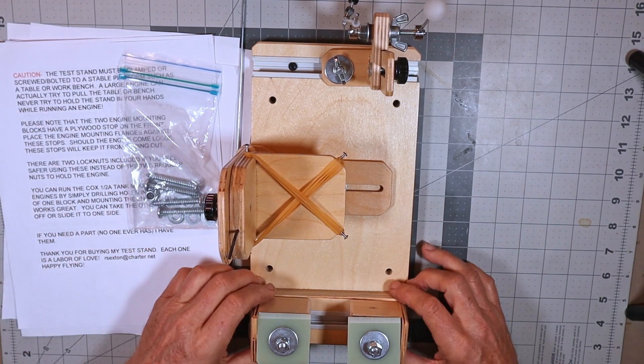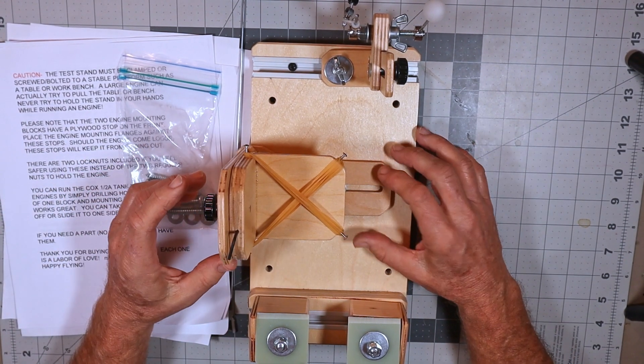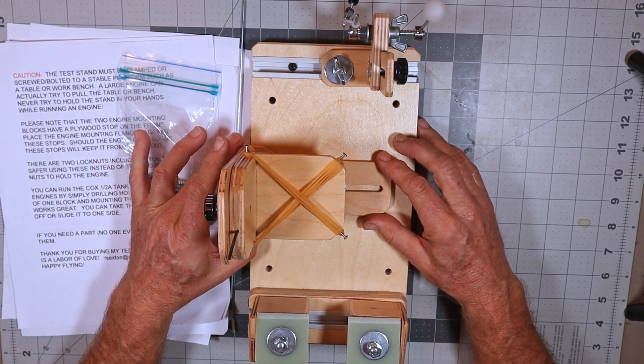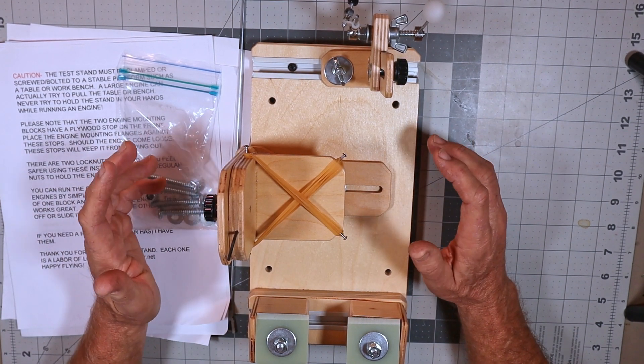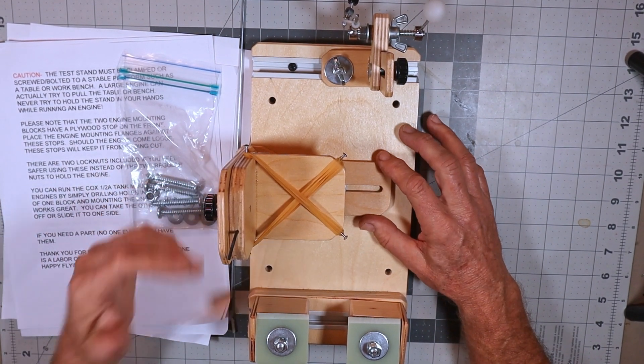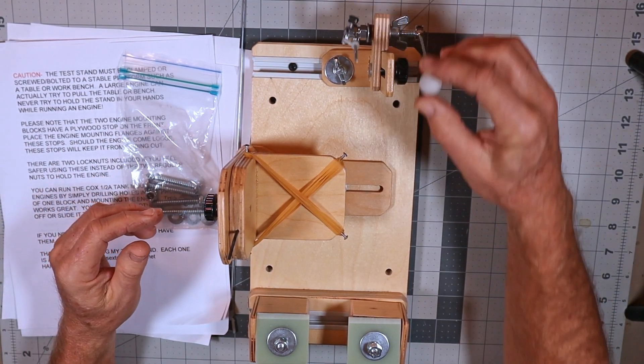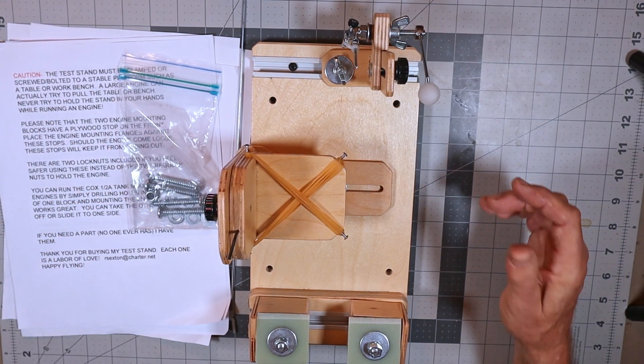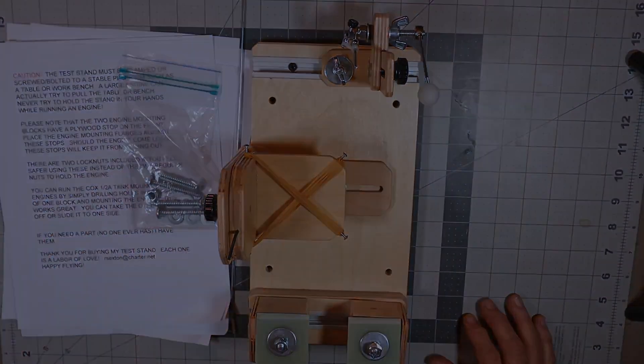So that's all for now, this Ron Sexton test stand. Hopefully I'll get this mounted on my Black and Decker Workmate here soon and I'd like to get this in play before winter sets in so I can actually get some runs on this and do a real test of the stand and its functionality. But I'm sure it's going to function beautifully. Anyway thank you all for watching.